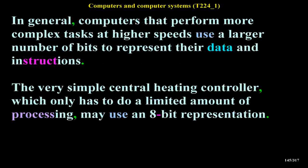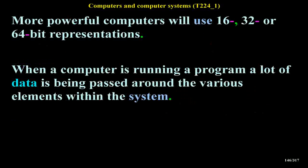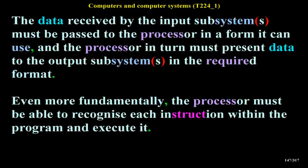In general, computers that perform more complex tasks at higher speeds use a larger number of bits to represent their data and instructions. A simple central heating controller may use an eight-bit representation, while more powerful computers use 16, 32, or 64-bit representations. When a computer is running a program, the data received by the input subsystems must be passed to the processor in a form it can use, and the processor must present data to the output subsystems in the required format. Most fundamentally, the processor must be able to recognize each instruction within the program and execute it.